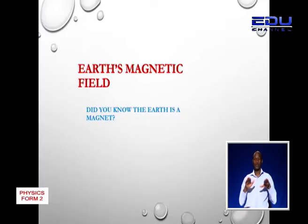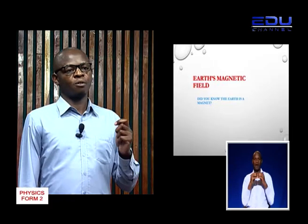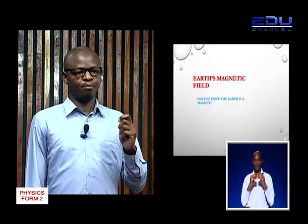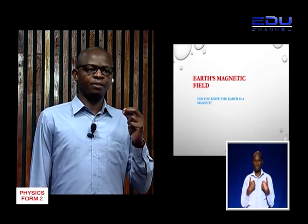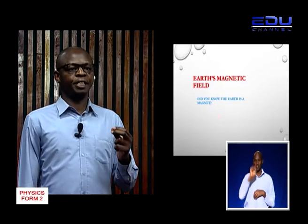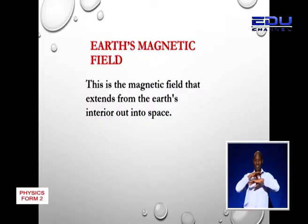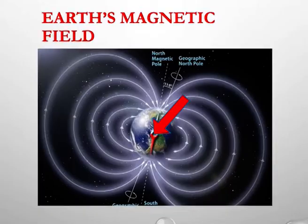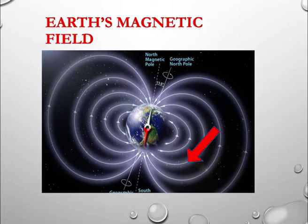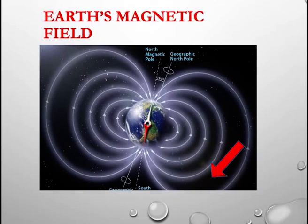The earth has a magnetic field and that makes it a magnet. Remember, magnets have a south pole and a north pole which generate a magnetic field. The earth's magnetic field is the magnetic field that extends from the earth's interior out into space, from the center all the way to the outside.